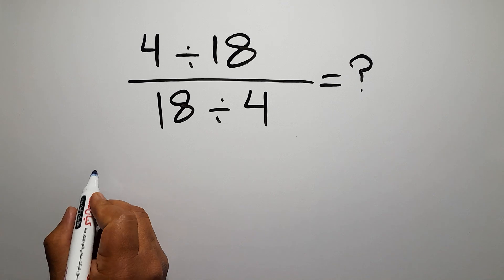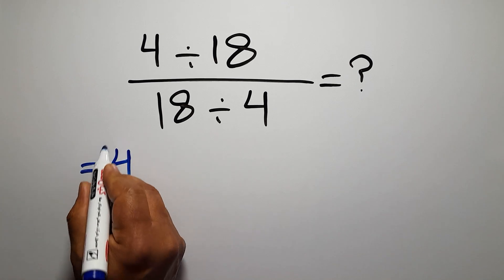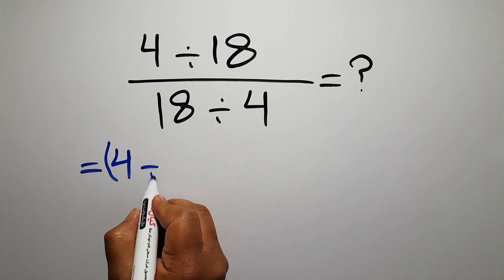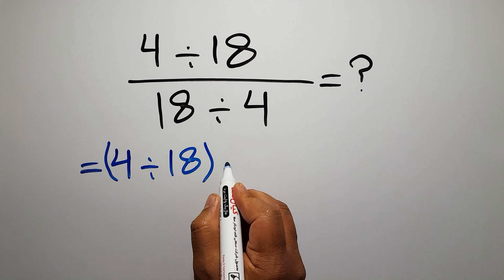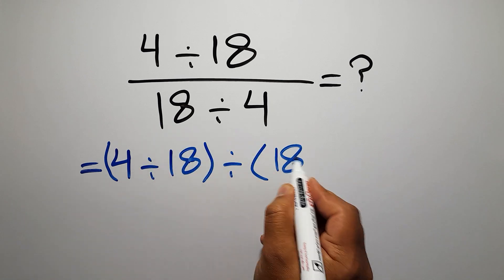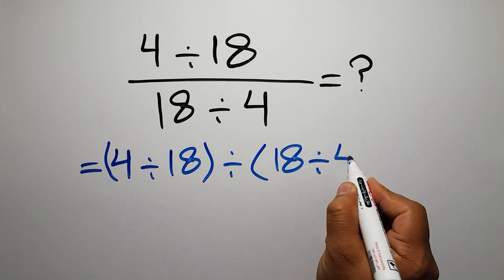Instead of this fraction, we can write it as (4 ÷ 18) ÷ (18 ÷ 4).